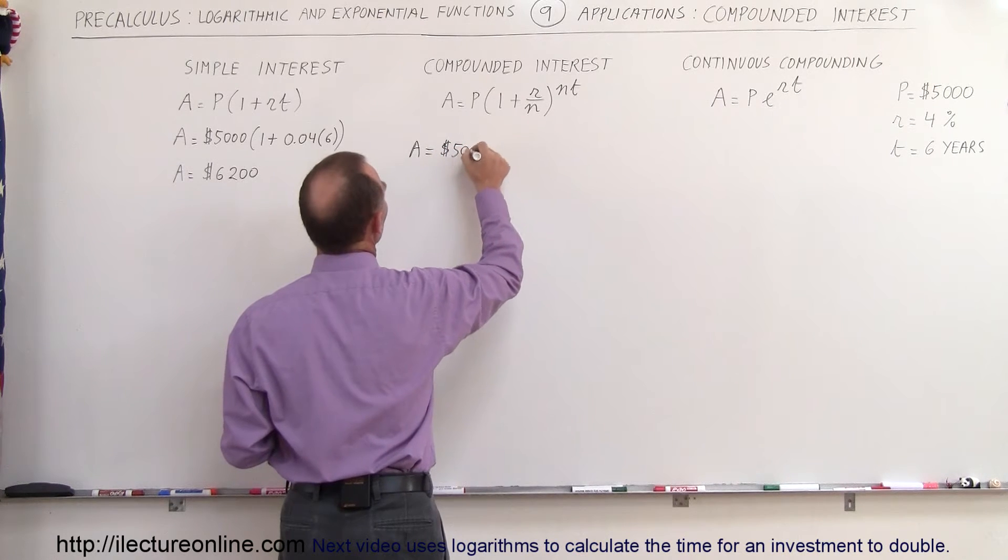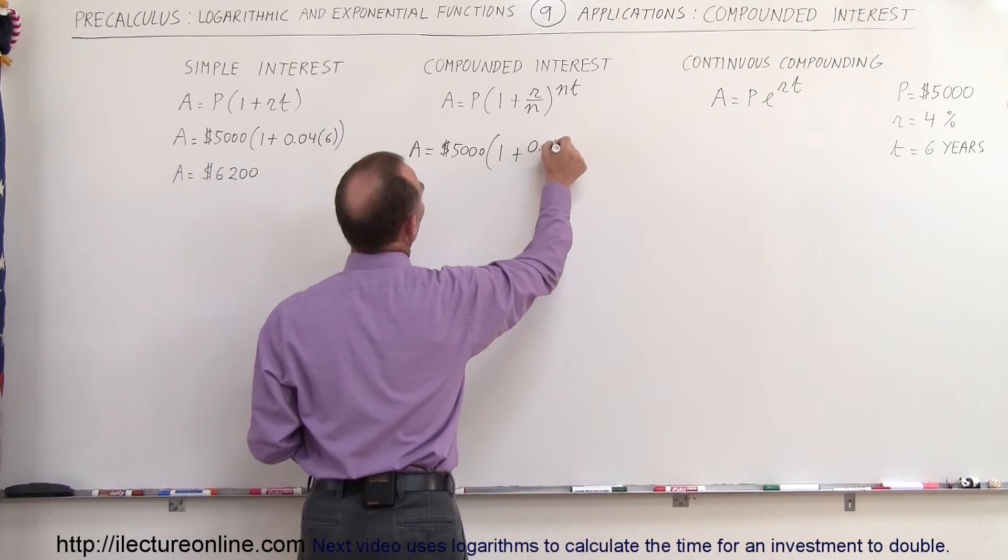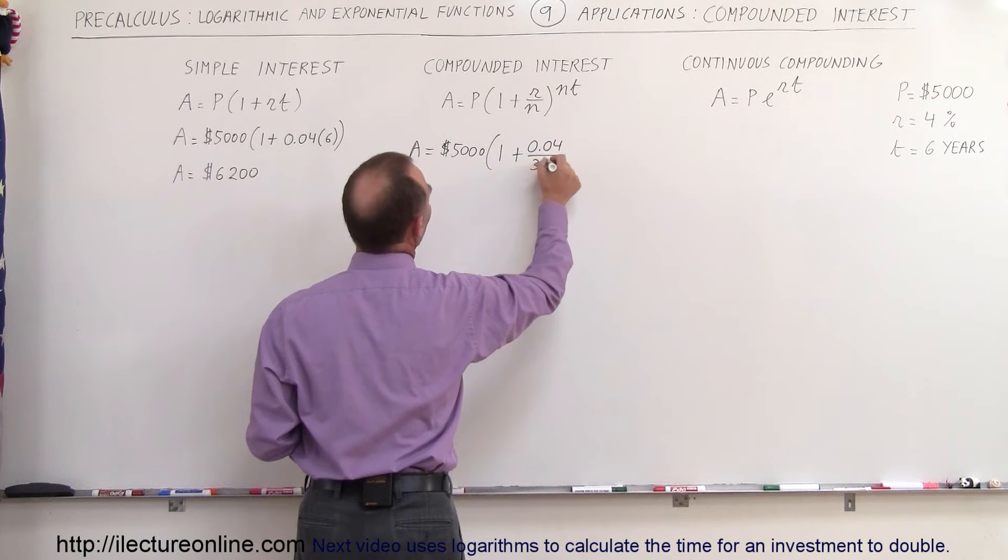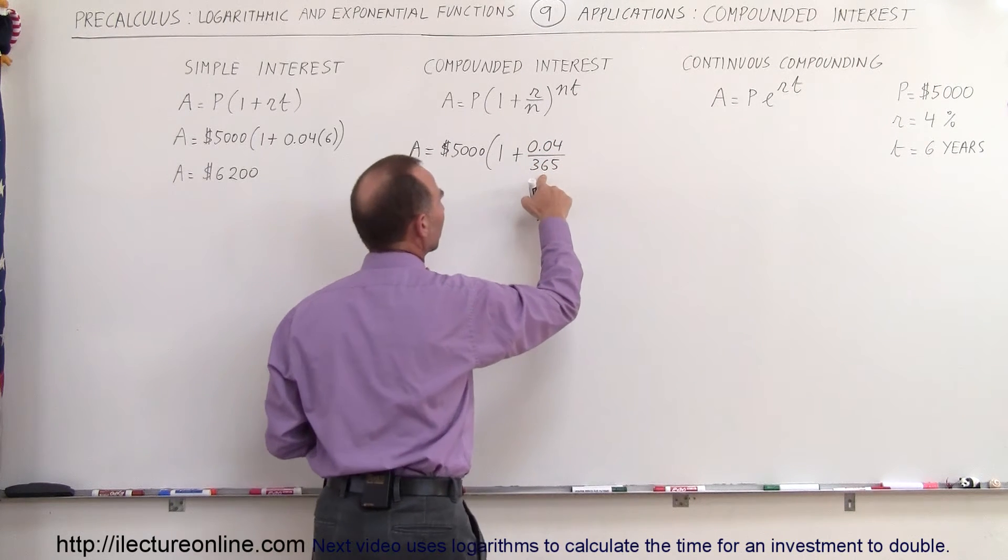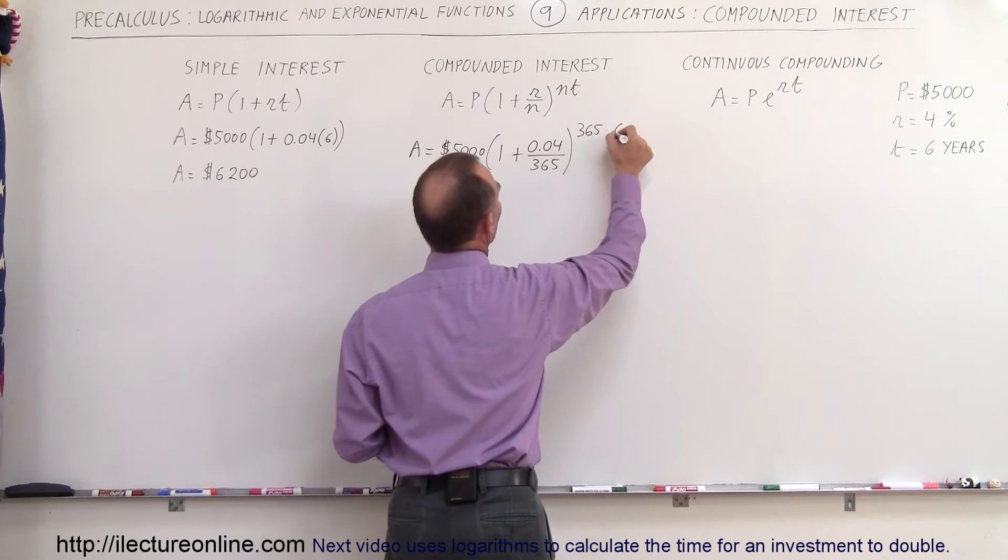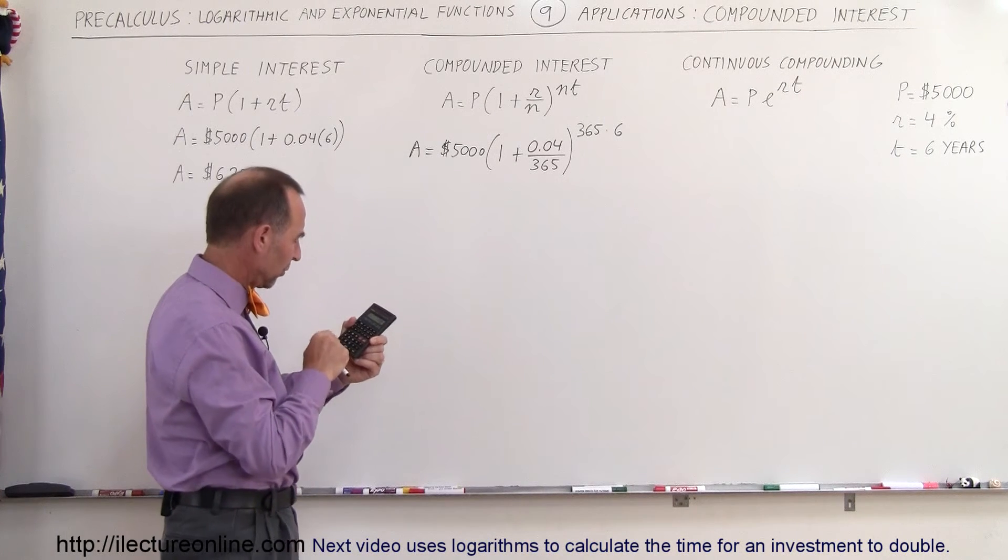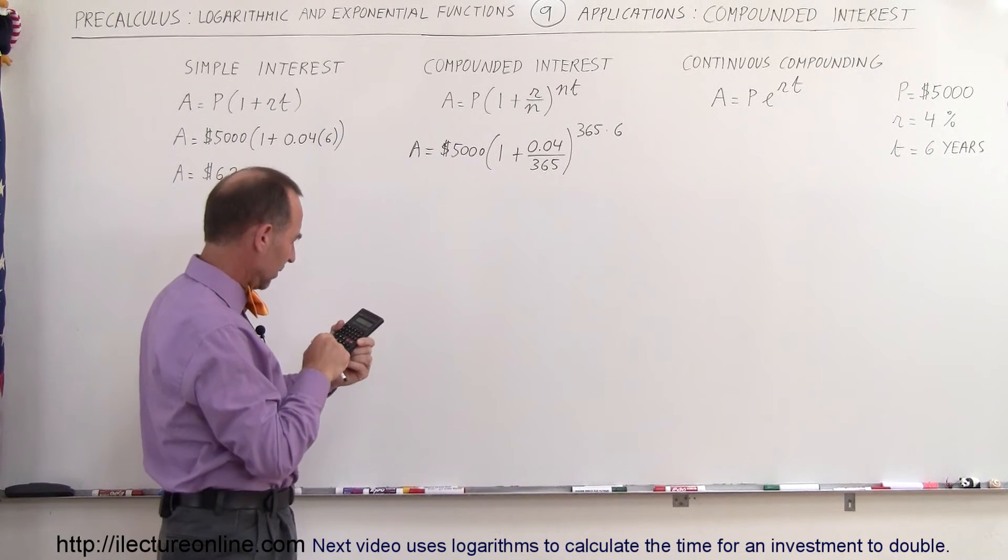which is $5,000 times 1 plus the rate, 0.04, divided by the number of times that we compound yearly, which is 365, raised to the 365 times the number of years, in this case 6 power.